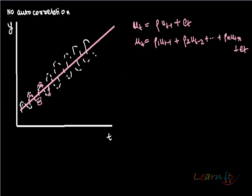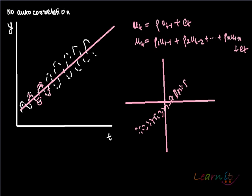If you have the error structure which is like this - an error structure which is increasing - this is like positive autocorrelation.